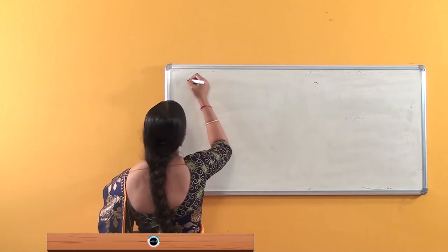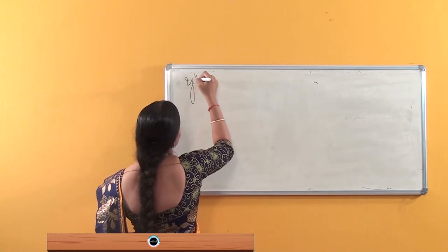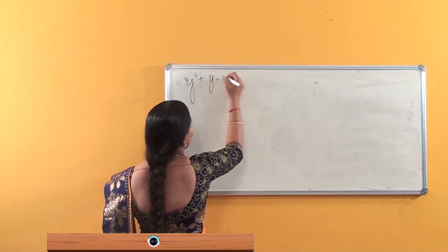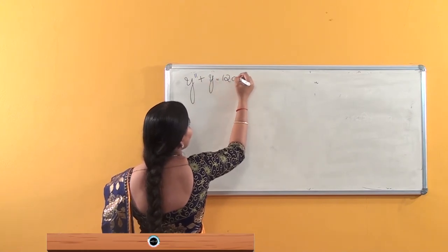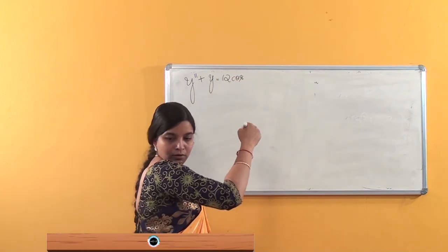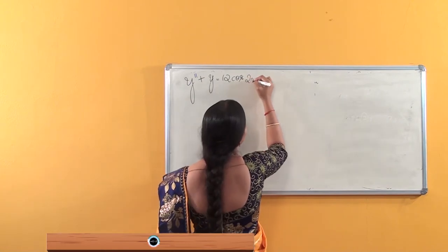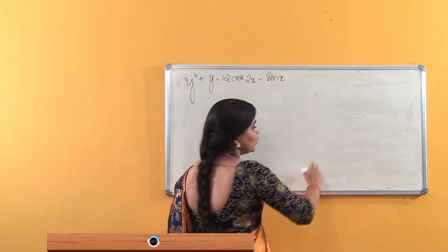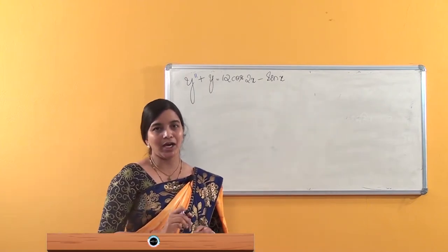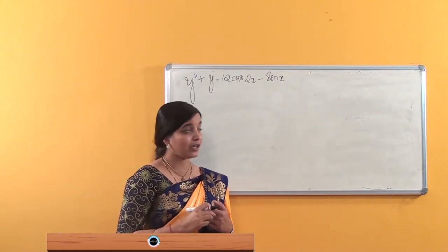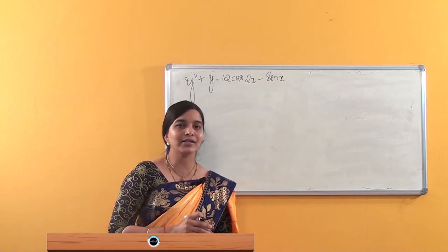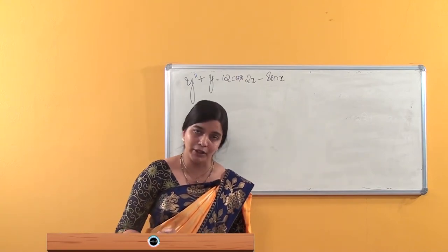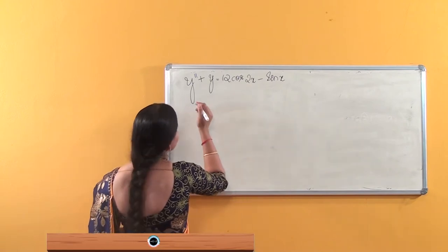Solve: Y double-dash plus Y is equal to 12cos2x minus sinx. In this, we have to find the general solution. To find the general solution, we have to find the complementary solution as well as the particular solution, as I already said.